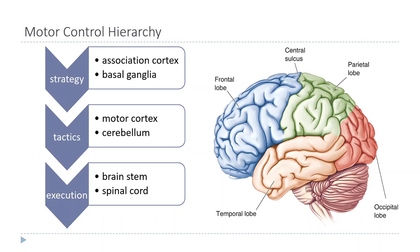The association areas are parts of the cortex that take sensory input from different modalities and put together your view of the world. Because moving requires knowing where objects are in space around you and where your body is in relation to those objects. There are also subcortical regions that help process that information — the basal ganglia are involved in that process as well. So strategy is about knowing what your goal is for your movement and how you're going to achieve it.